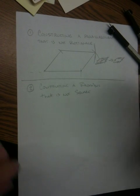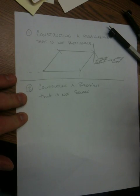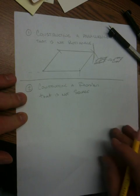Second construction: constructing a rhombus that is not a square. It's very similar to a parallelogram that is not a rectangle.